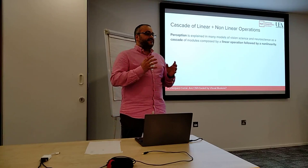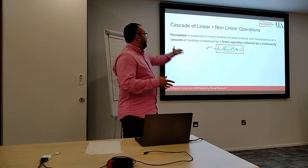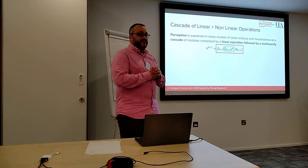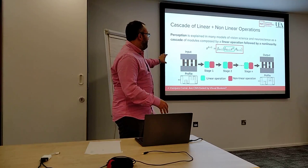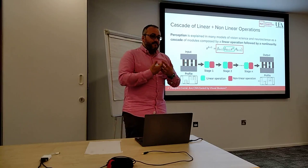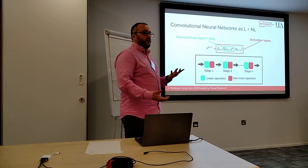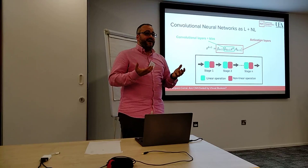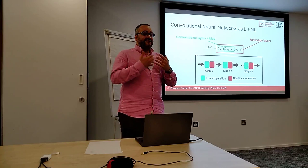Many methods over the years have stated that any vision model is a cascade of a linear plus a nonlinear model. This can be written as an equation where we have in green the linear part and in red the nonlinear part. As a module, this is linear-nonlinear, linear-nonlinear, instead of blocks. This formulation is actually the formulation of convolutional neural networks: convolutional layers and bias are linear, and activation layers are nonlinear.